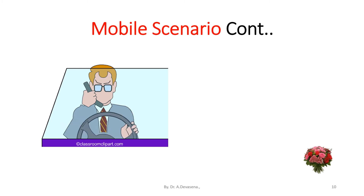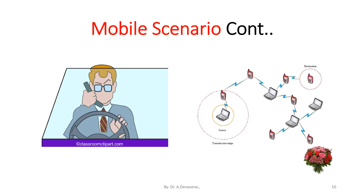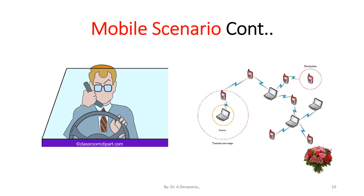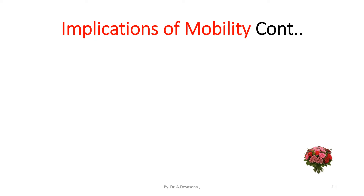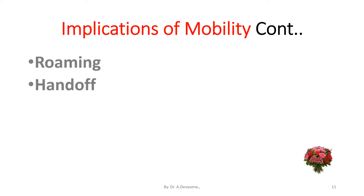Now we are going to see the transmission range between the server and the client. Here the server is represented as a laptop and the client is represented as a mobile phone, as indicated in the second diagram. We are going to discuss the implications of mobility with the help of two topics: roaming and handoff. We will discuss these two topics in detail in further slides.